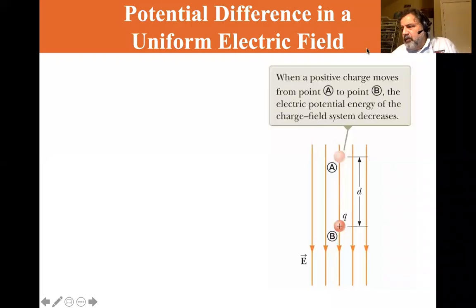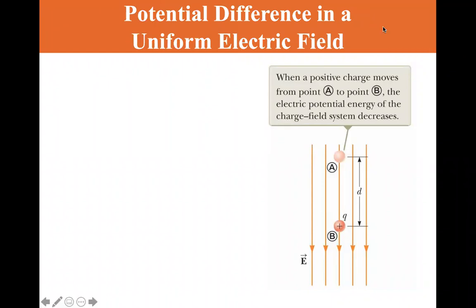All right, we're at section 24.2, potential difference in a uniform electric field. Let me dismiss my image there, and we'll look here. When a positive charge moves, first, let's look at the configuration they have here.